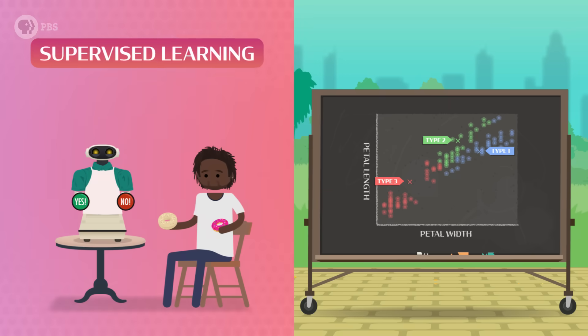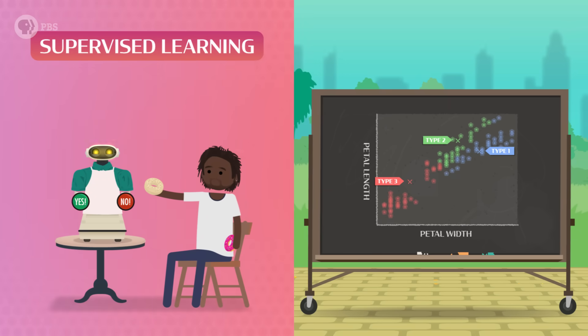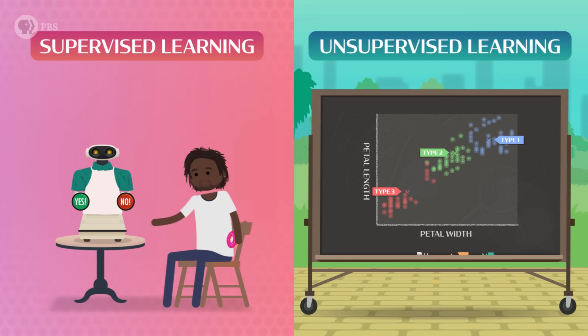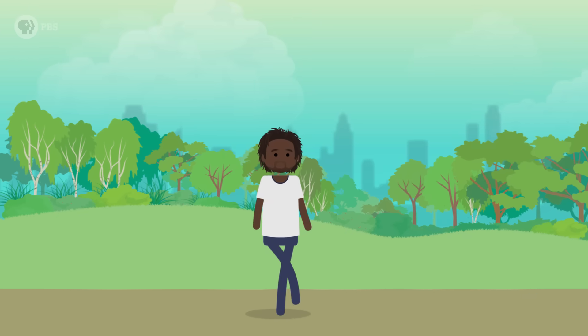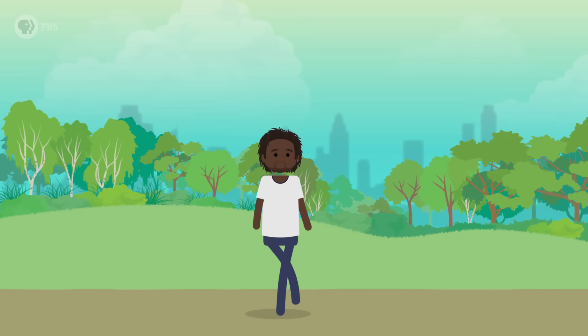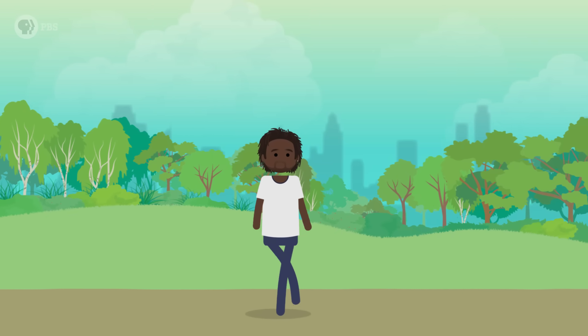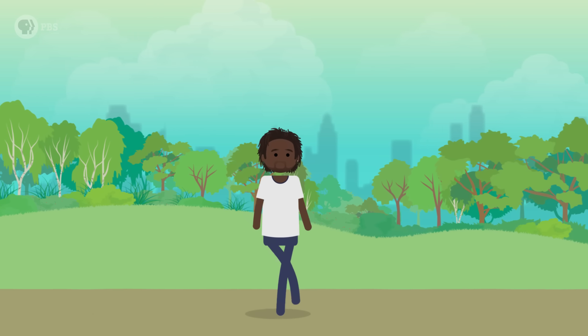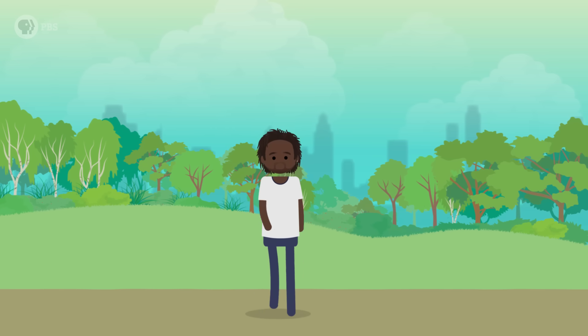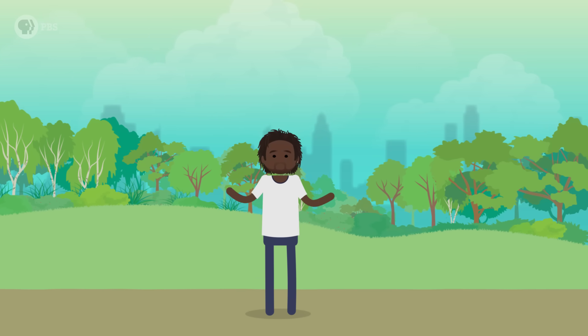So far, we've talked about two types of learning in Crash Course AI: supervised learning, where a teacher gives an AI answers to learn from, and unsupervised learning, where an AI tries to find patterns in the world. Reinforcement learning is particularly useful for situations where we want to train AIs to have certain skills we don't fully understand ourselves. For example, I'm pretty good at walking, but trying to explain the process of walking is kind of difficult. What angle should your femur be relative to your foot? It's really difficult. With reinforcement learning, we can train AIs to perform complicated tasks.